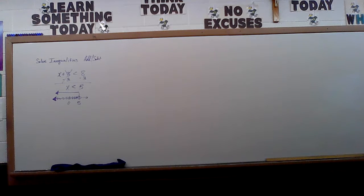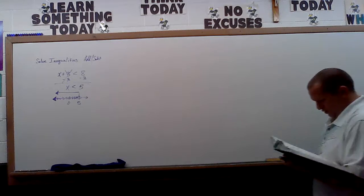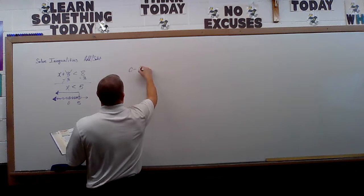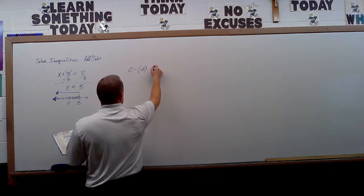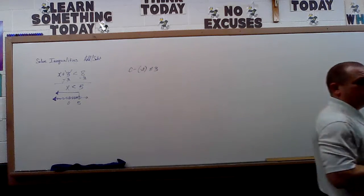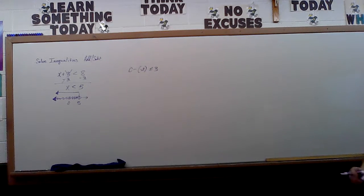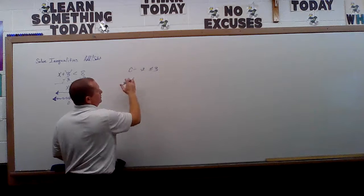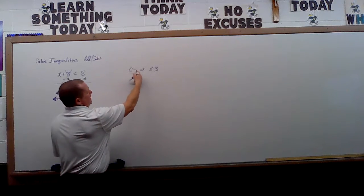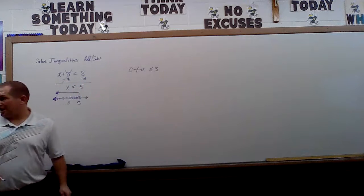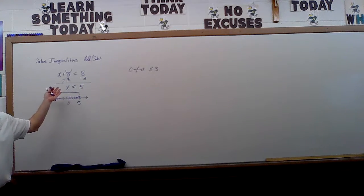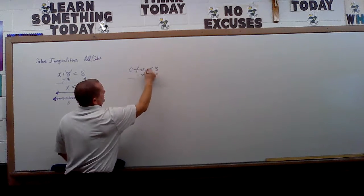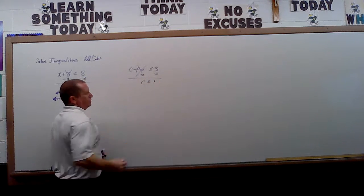Another one that I would show you would be this one. C minus a negative 2 is less than or equal to 3. This is the one where I would automatically, anytime I see back-to-back negatives, I'm going to make it into one giant plus sign. Then I'm right back to what we just got done doing. How do I get rid of plus 2? Subtract 2 from both sides. They cancel out. C is less than or equal to 1.